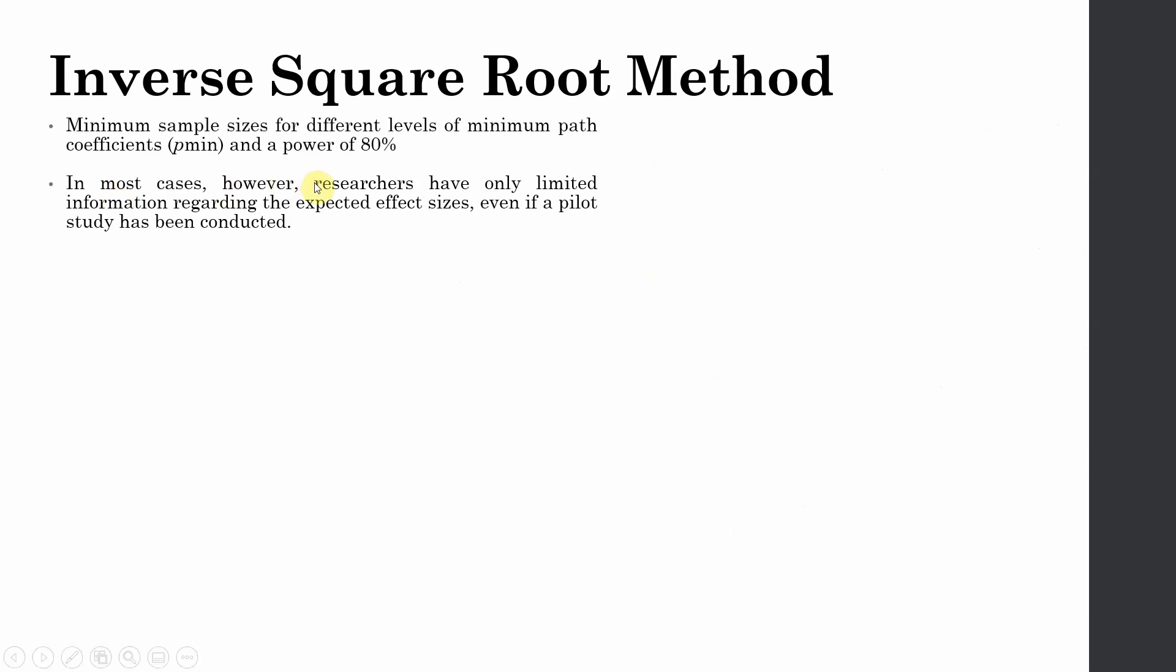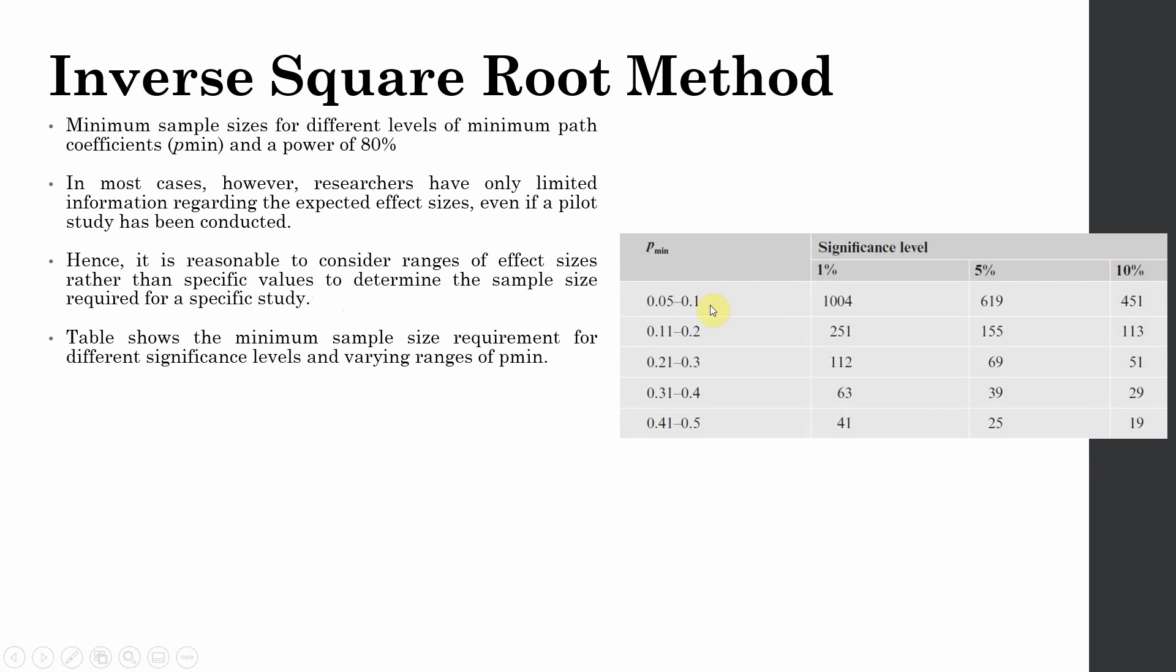In most cases, researchers have only limited information regarding the expected effect sizes, even if a pilot study has been conducted. Hence, it is reasonable to consider ranges of effect sizes rather than specific values like 0.20. This is the table that you can use. For example, if your effect size is 0.05 to 0.11 or 0.11 to 0.20, these are the sample sizes that you require according to your significance level. The higher the effect size, the lower will be your sample size.